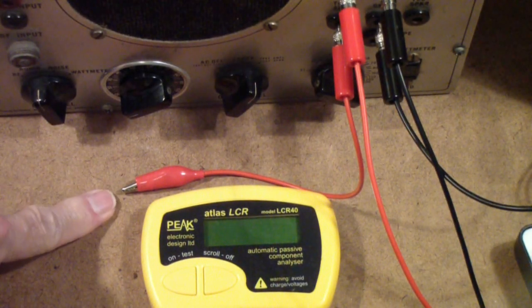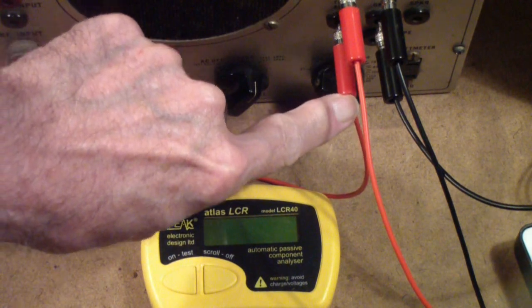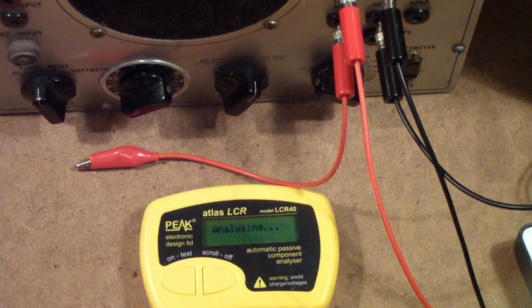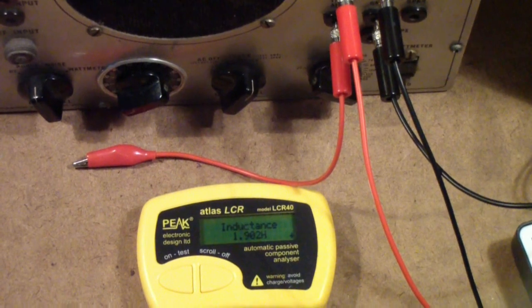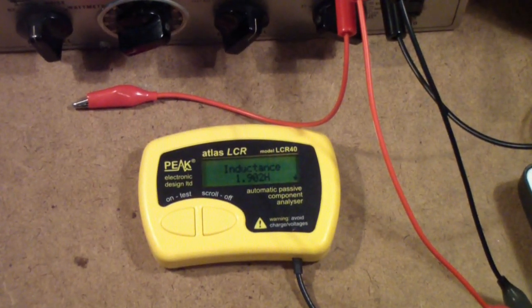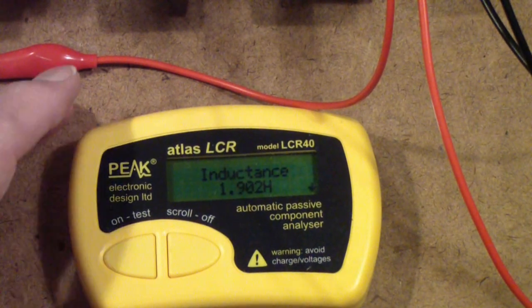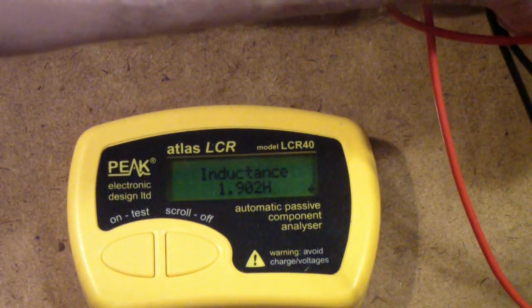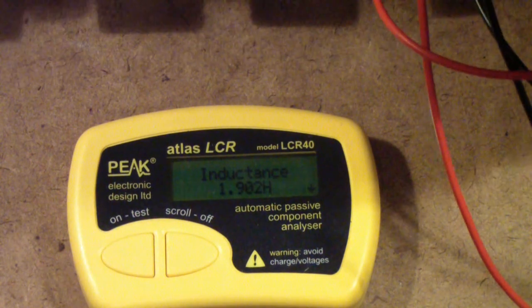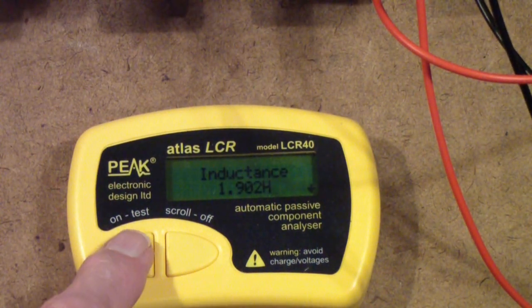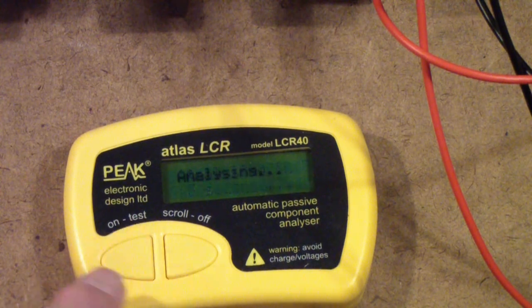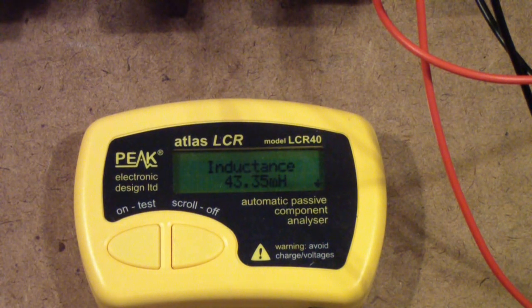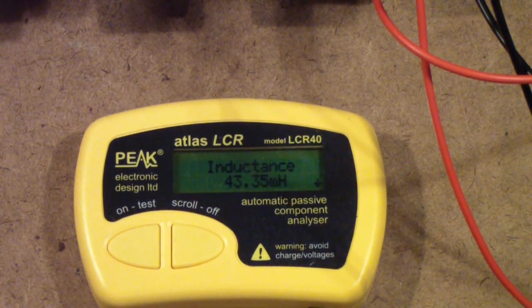So the first thing I'm doing is opening the secondary. I have a wire connected to the secondary, but as you can see it's just laying open on the bench. So this is just the inductance of the primary itself. And you notice we get about 1.9 henrys. Now what I'm going to do is short the secondary. And we get about 43.35, let's call it 43 millihenrys.